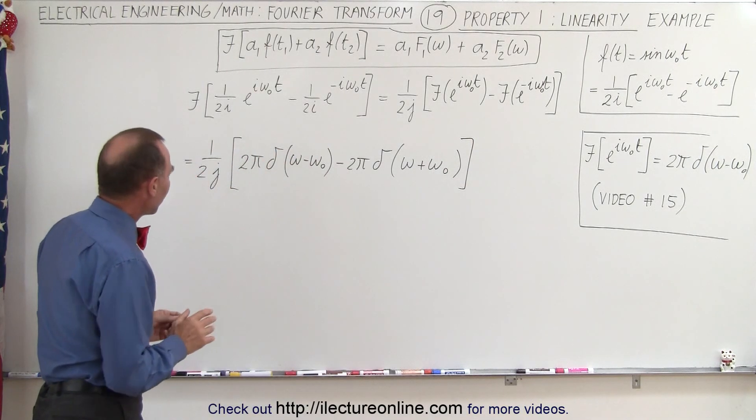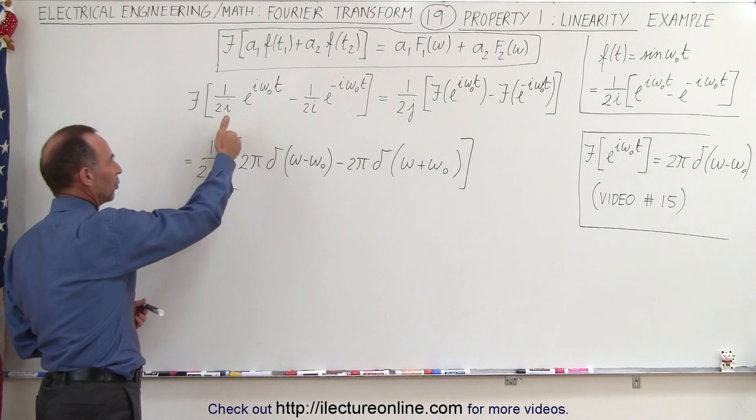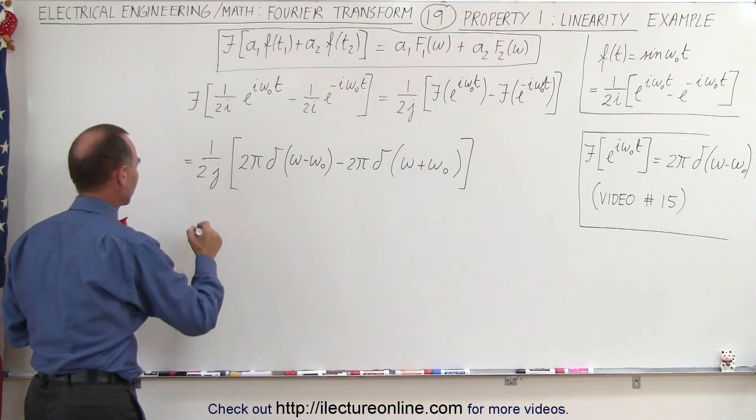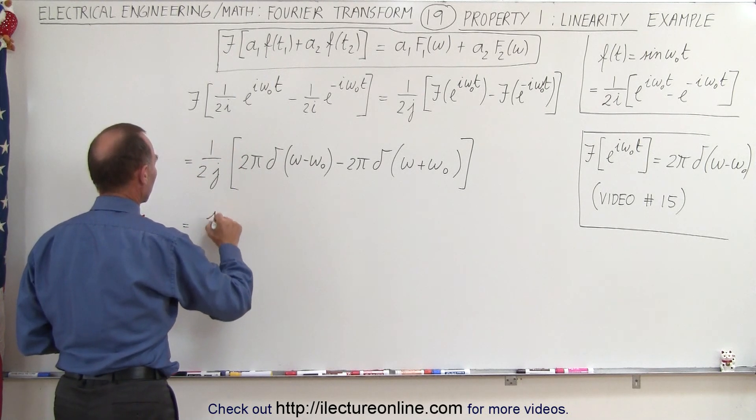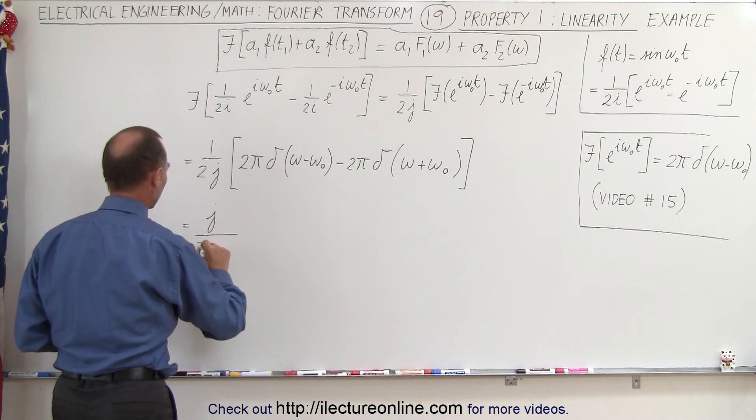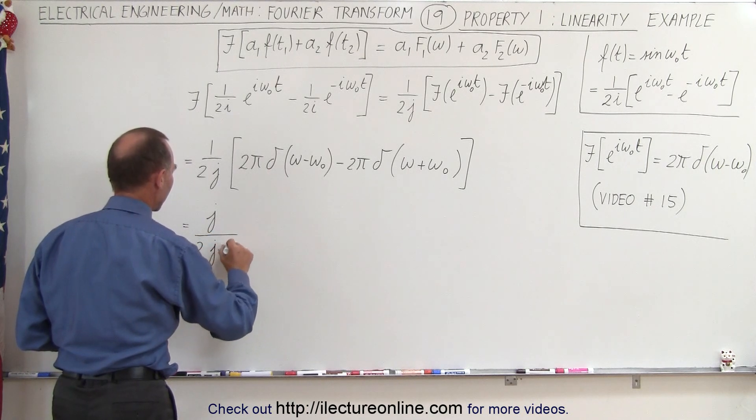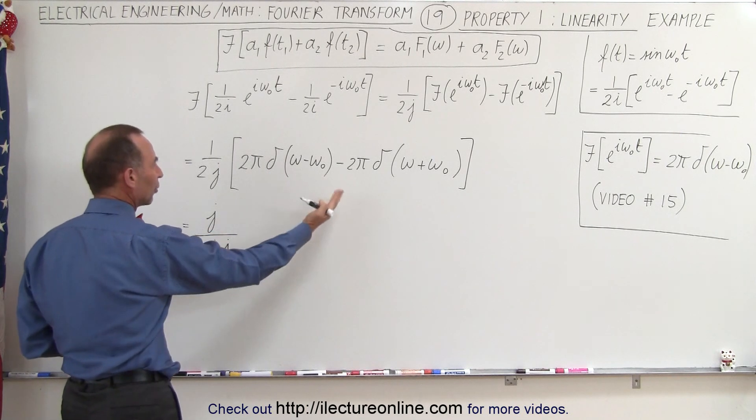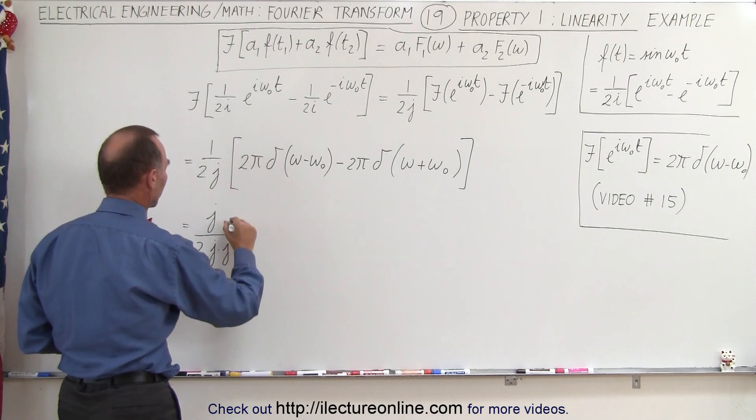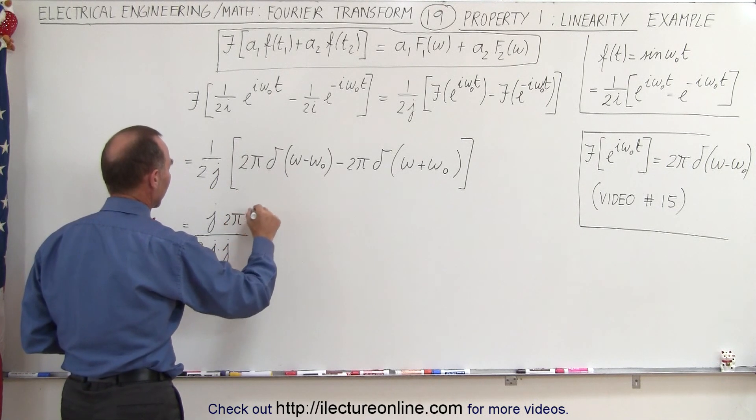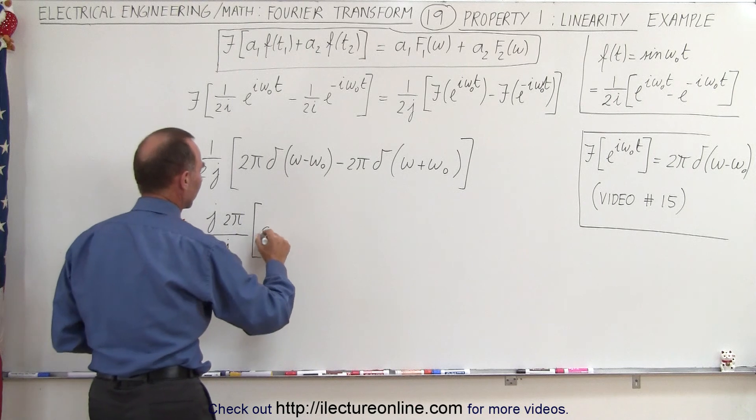To simplify this, we're going to multiply both the numerator and denominator by j. This becomes equal to j divided by 2j times j, and then we're also going to pull out a 2 pi. So we multiply this times 2 pi, and then we have a delta function.